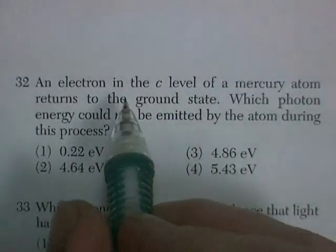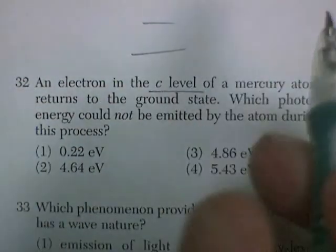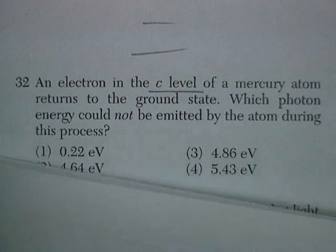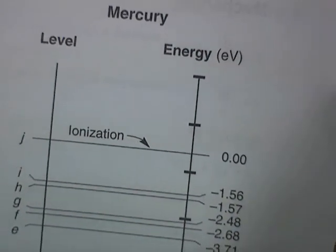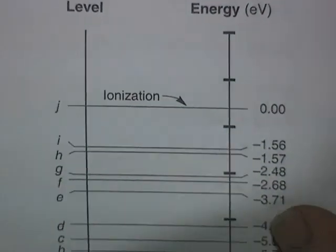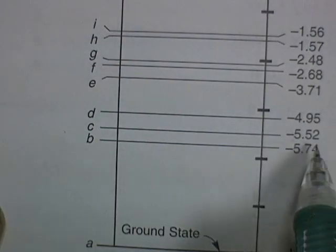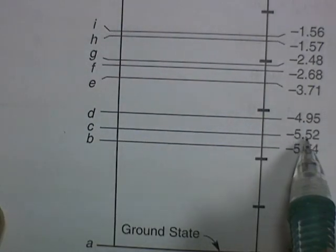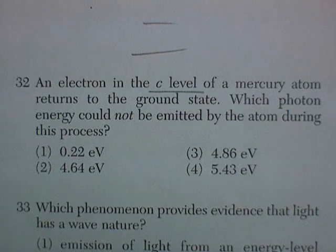Question 32. An electron in the C energy level of a mercury atom — and there's the mercury energy level diagram. We're in the C level right here, which corresponds to 5.52 eV. You'd have to add that much to rip it out of there. And it returns to the ground state.